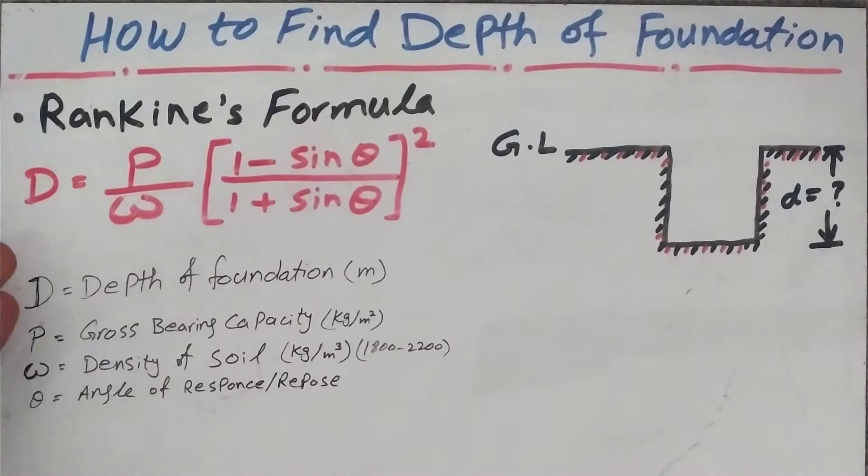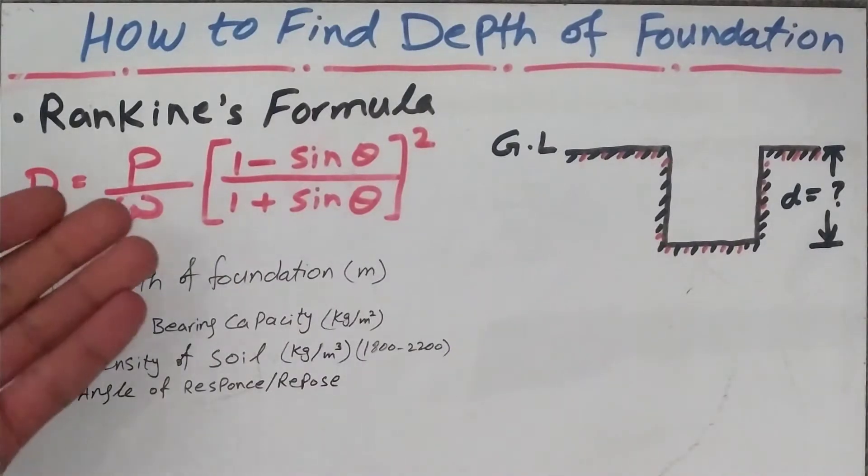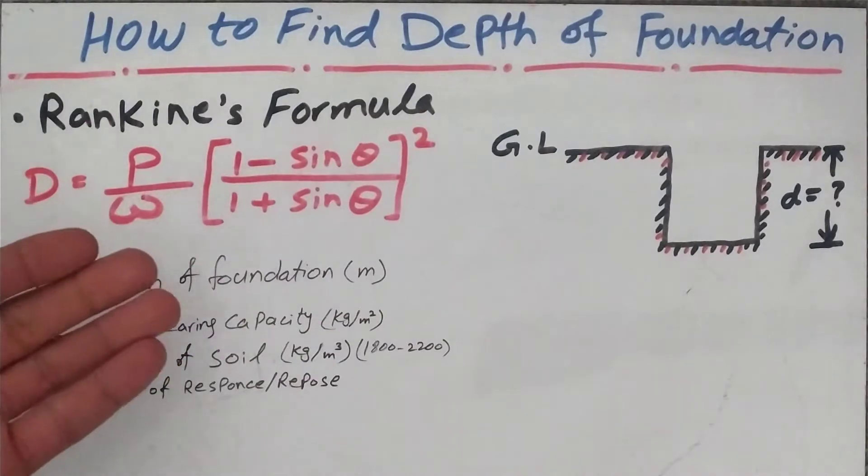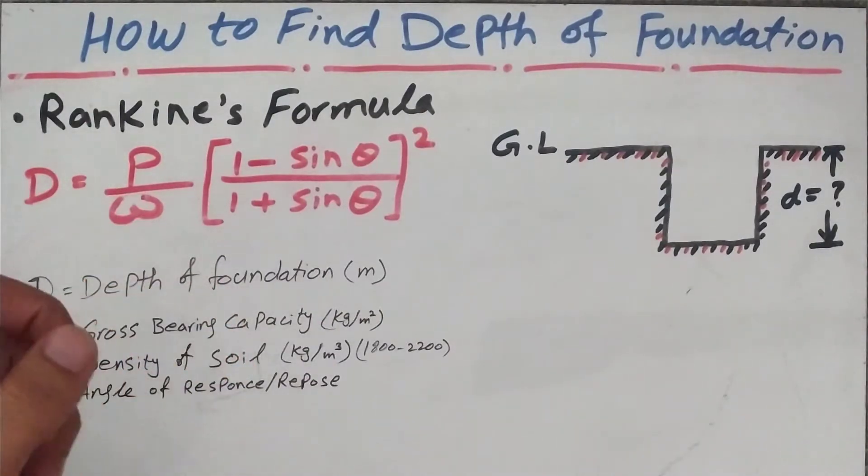For that reason, we have a formula called Rankine's formula, which as you can see on the screen: D = P/ω × [(1 - sin θ)/(1 + sin θ)]². In this case, D is the depth of foundation which is in meters.